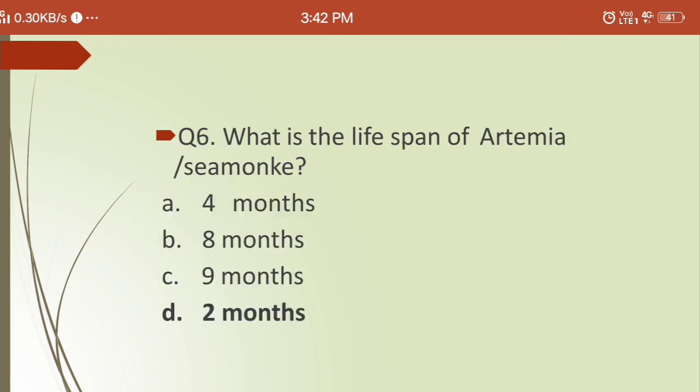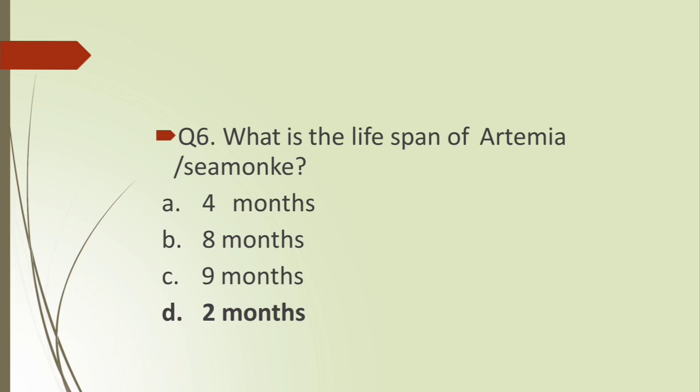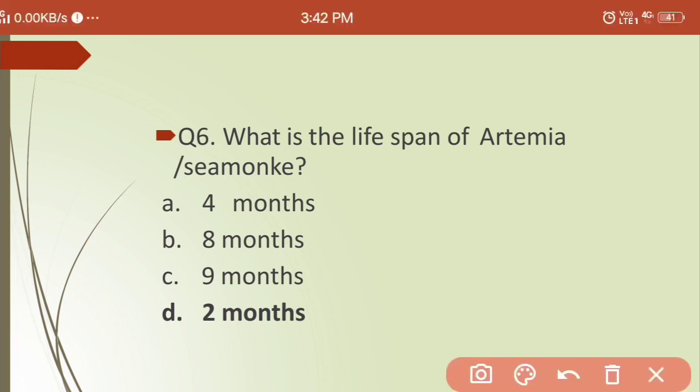Sixth question: what is the lifespan of Artemia, also called the sea monkey? Options are: (a) four months, (b) eight months, (c) nine months, (d) two months. The answer is two months — Artemia, the sea monkey, has a lifespan of two months.